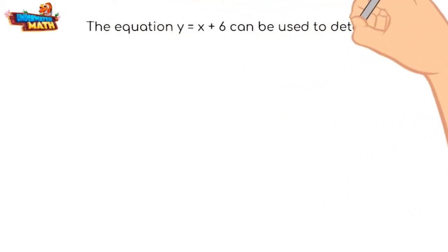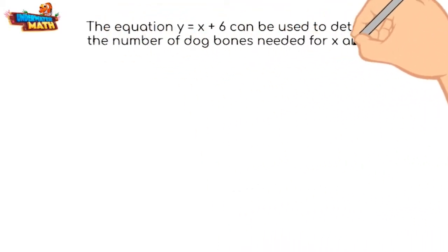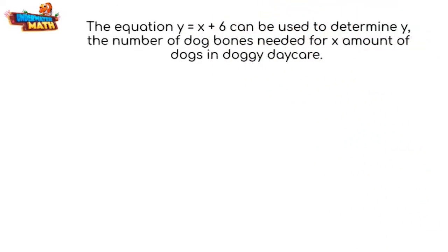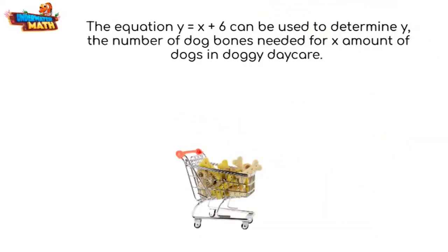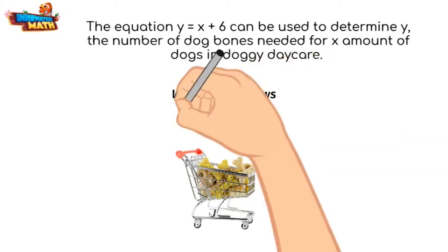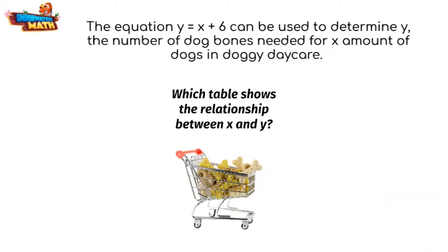Let's look at an example. The equation y = x + 6 can be used to determine y, the number of dog bones needed for x amount of dogs in doggy daycare. Which table shows the relationship between x and y?